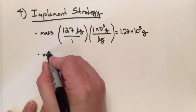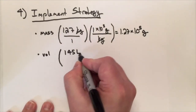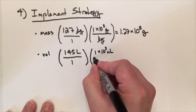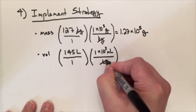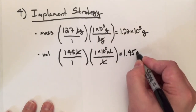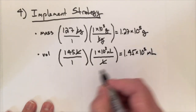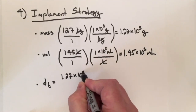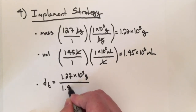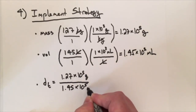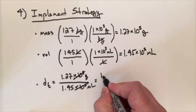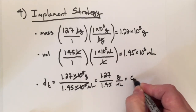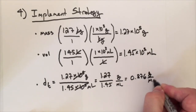The volume of toluene is 145 liters times the conversion factor, 1 times 10 to the 3 milliliters per liter. Cancelling out liters, we're left with 1.45 times 10 to the 5th milliliters. We now calculate the density of toluene: 1.27 times 10 to the 5th grams divided by 1.45 times 10 to the 5th milliliters. The 10 to the 5th terms cancel, leaving 1.27 divided by 1.45 grams per milliliter, which equals 0.876 grams per milliliter.